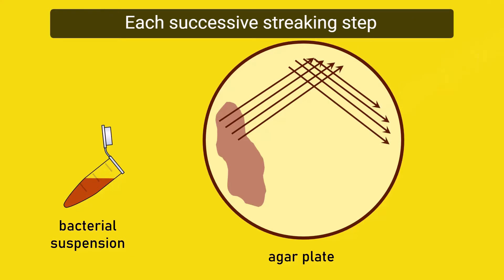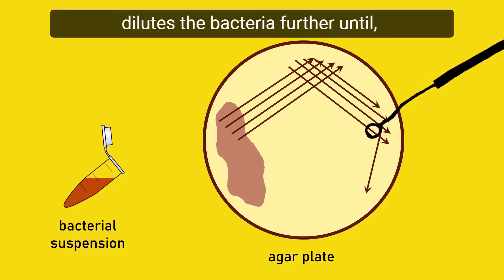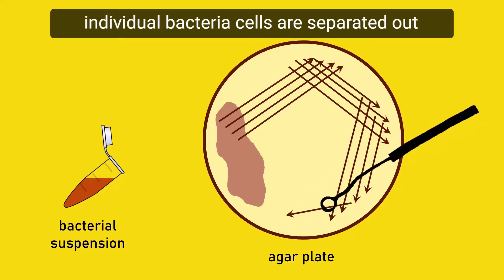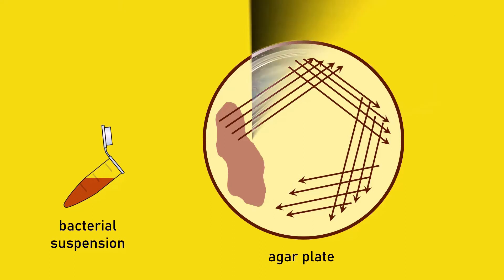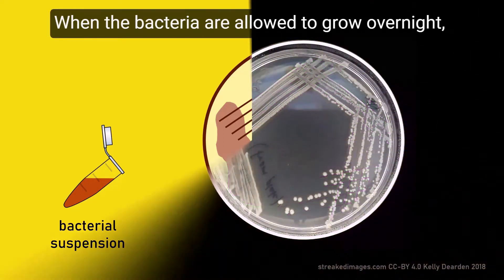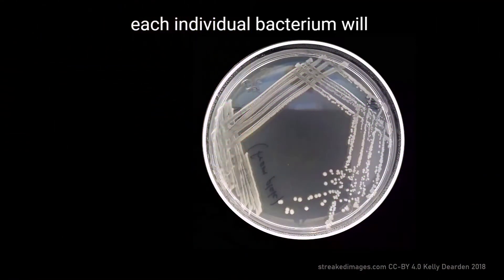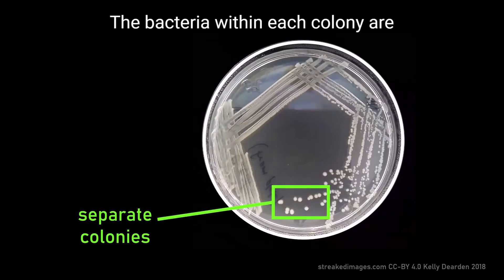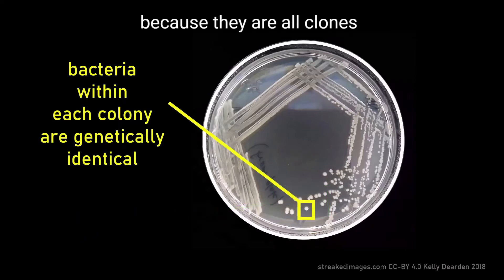Each successive streaking step dilutes the bacteria further until, at the final step, individual bacteria cells are separated out on the agar. When the bacteria are allowed to grow overnight, each individual bacterium will give rise to a visible colony. The bacteria within each colony are genetically identical to one another, because they are all clones of a single bacterium.